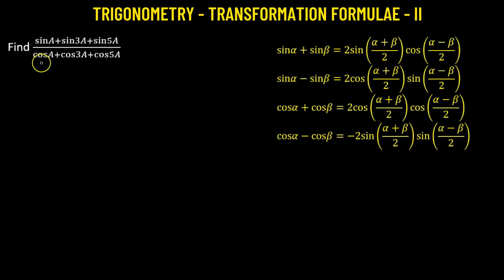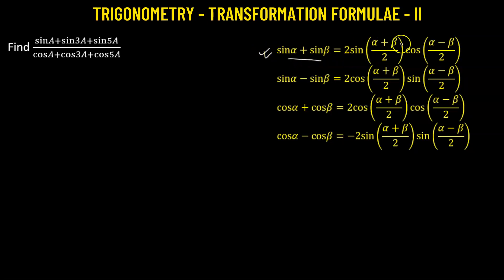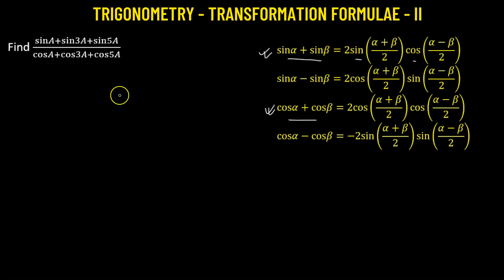In this problem, we need to determine the value of the given trigonometric expression. In the numerator, we have the sum of sine functions, so we will use the transformation formula where the sum of sine functions transforms into the product of a sine and cosine function. In the denominator, we have the sum of two cosine functions, which will transform into the product of two cosine functions. We will be using these two transformation formulas.